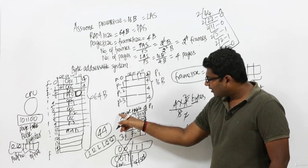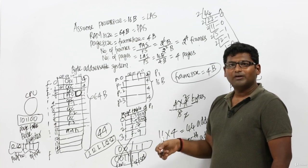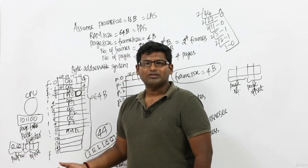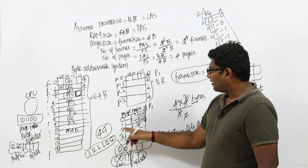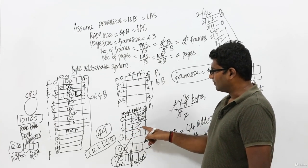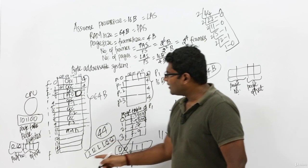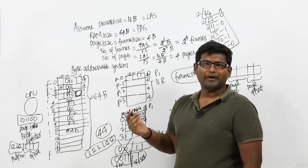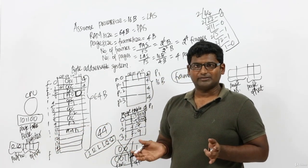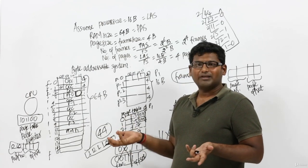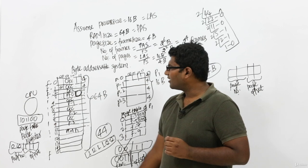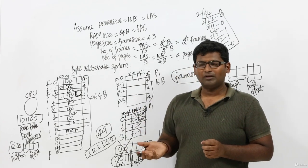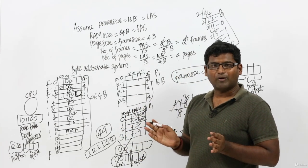Once reaching the page table, the CPU uses the page number from the logical address to index the page table and find the exact entry number. Within that entry, it finds the frame number. It then replaces the page number with the frame number, converting the logical address into a physical address. Using the physical address, the CPU goes straight into RAM and executes the exact byte of the process. This is how the CPU executes a process using paging.